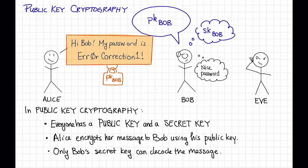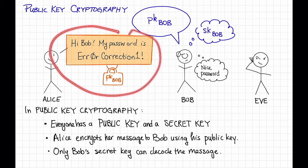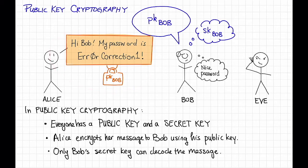On the other hand, when Eve eavesdrops, she sees the same thing that Bob does, but she doesn't have Bob's secret-key. And we hope that without that secret-key, she's not able to unlock this message, and she's not able to, in this example, learn Alice's password. So that's the basic setup.